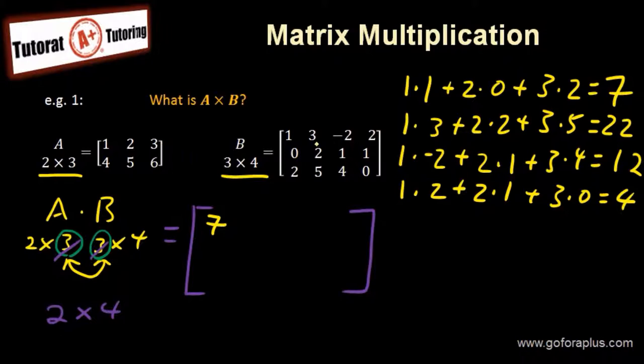Now first row, second column is right here, so that's 22. And then first row, third column, 12. And then we have the 4.